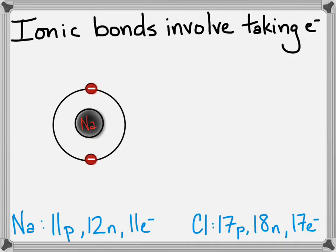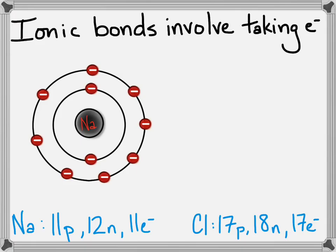But according to the octet rule, the first energy level fills with just two electrons, then eight, then eight again. And we're going to need our atomic number to tell us the electron number for these uncharged atoms. So, sodium is 11 and chlorine is 17.